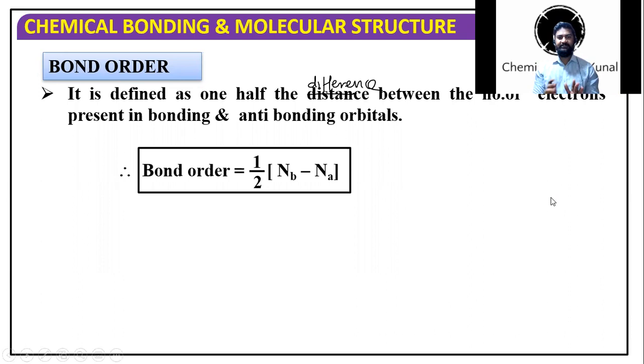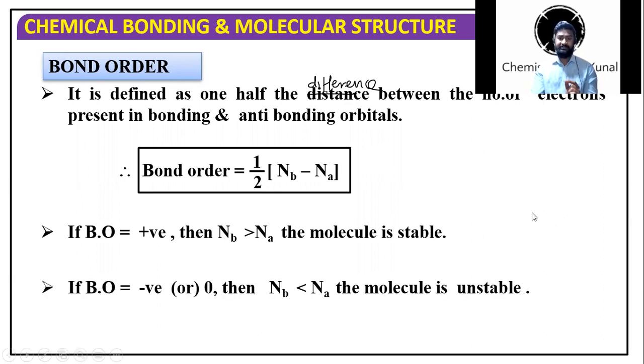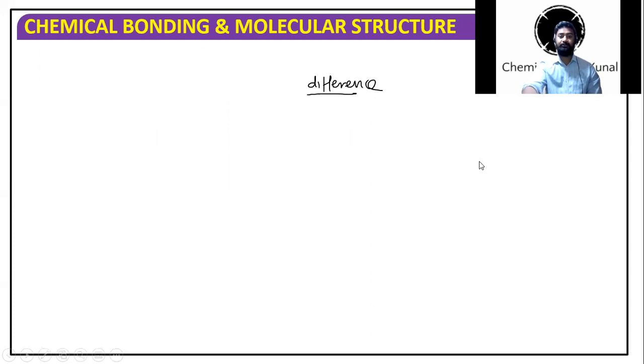But we're not using all these things for our questions. Let's start with a few concepts. If you see that bond order comes out to be a positive value, then the molecule is stable. If it comes out to be negative value, the molecule is unstable.